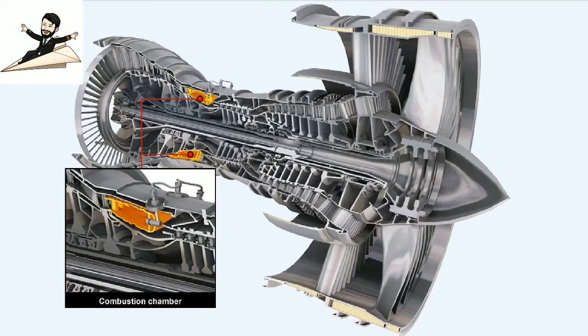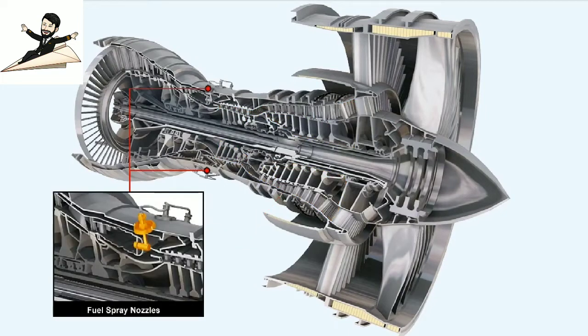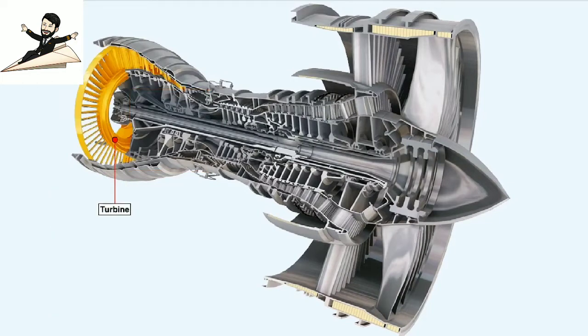The combustion chamber or combustor must contain the burning mixture of air being passed from the compressor and fuel from the fuel spray nozzles in order to generate the maximum heat release at a substantially constant pressure so that the turbine receives a uniformly expanded, heated and accelerated stream of gas.